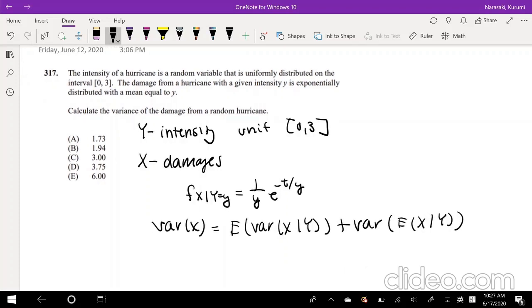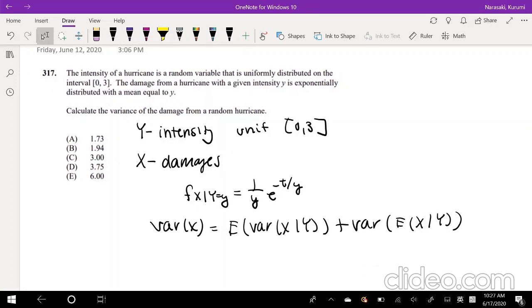We need a lot more information then, don't we? So let's think it through. From this, we know, let's read this sentence again. The damage from a hurricane with a given intensity y is exponentially distributed with a mean equal to y. So this one basically tells you the mean or expected value of x given y is equal to y. So this is another information that we have.